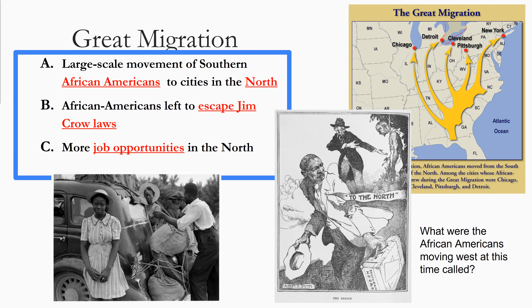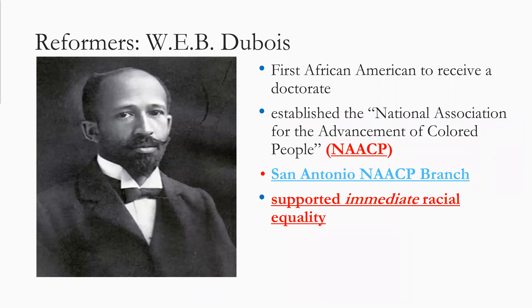Now let's talk about some reformers. One important one is W.E.B. Du Bois. He was the first African American to receive his doctorate — the first black doctor in America. He would help establish the NAACP, the National Association for the Advancement of Colored People, and was part of a branch of it. He wanted immediate racial equality granted to the African American community.